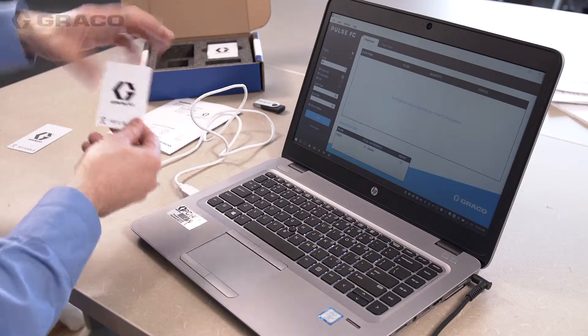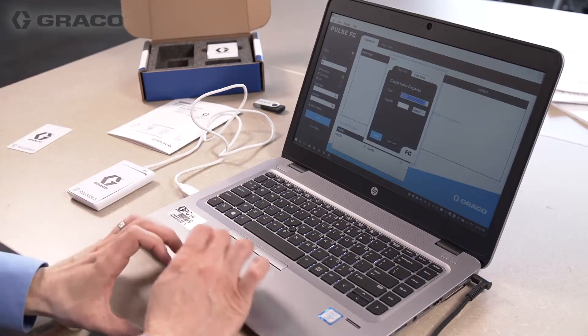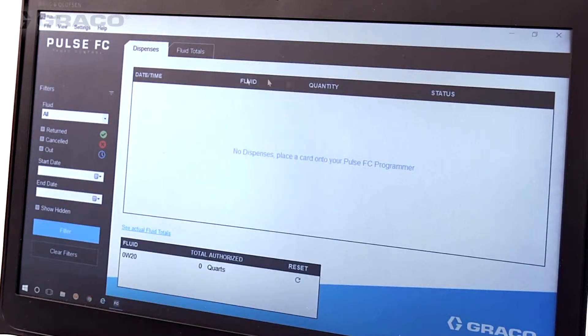First, place a blank fluid card on the Pulse FC programmer. Next, in the Pulse FC software, click on Settings, then scroll to Setup, and finally click on Calibration.